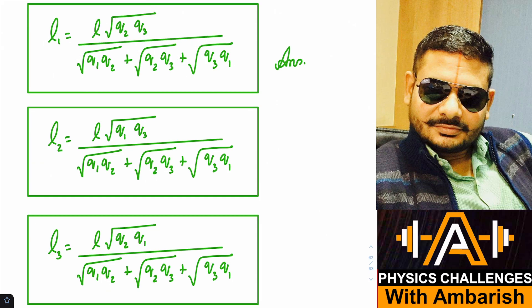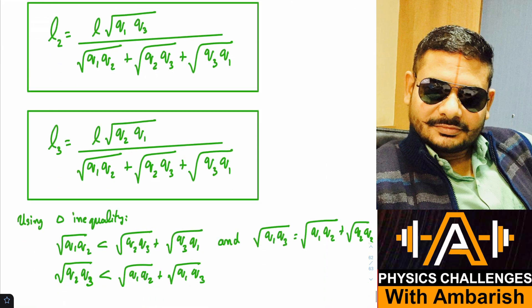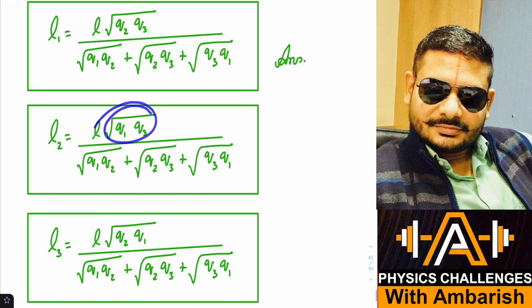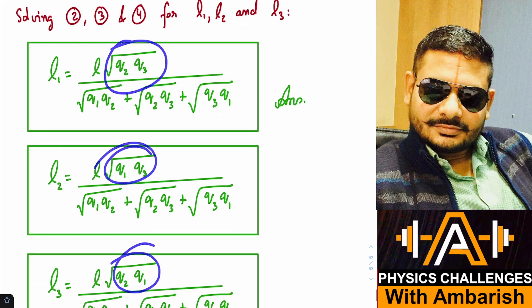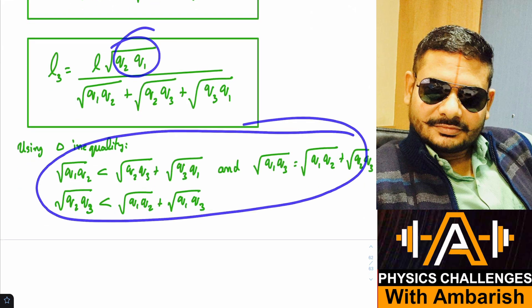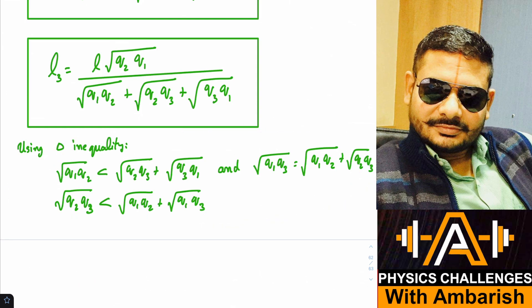And also in part B of the question, it was asked what should be the relation Q1, Q2, and Q3 so that this type of triangle can be formed. So you know that to form a triangle, the sum of two sides must be greater than the third side. So if you use that inequality, we can say that this plus this must be greater than this. So these three inequalities are written here. So simple conclusion we can draw here for part B is pretty simple.